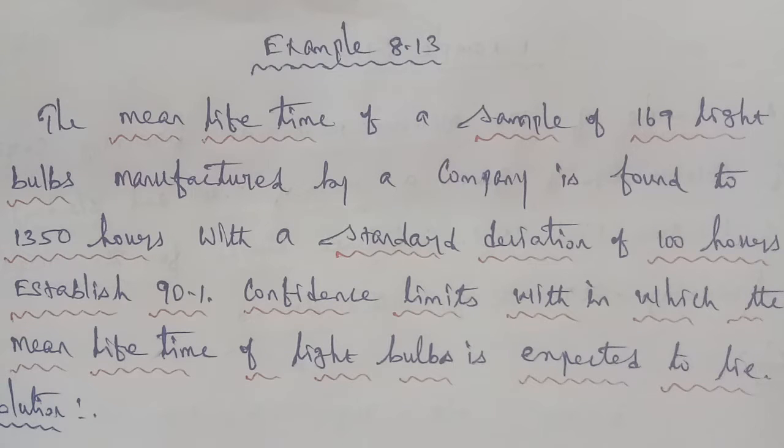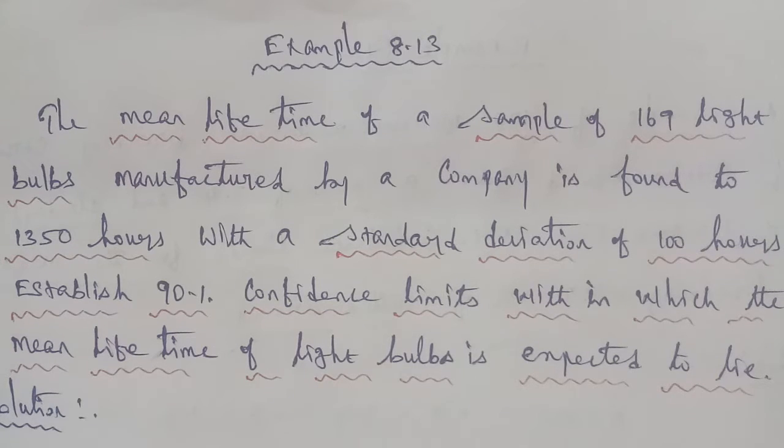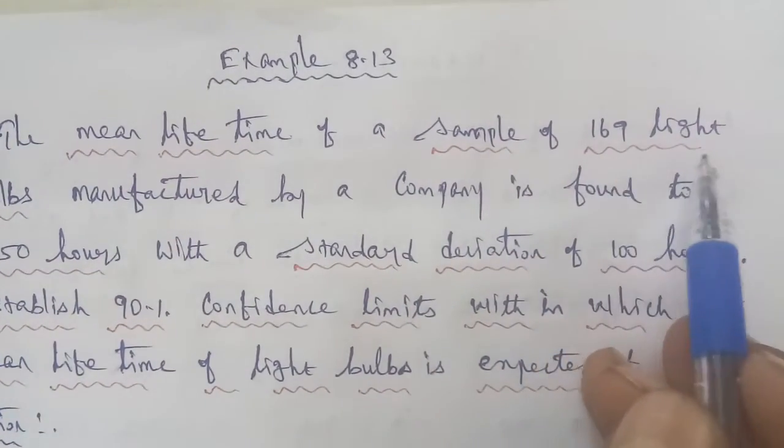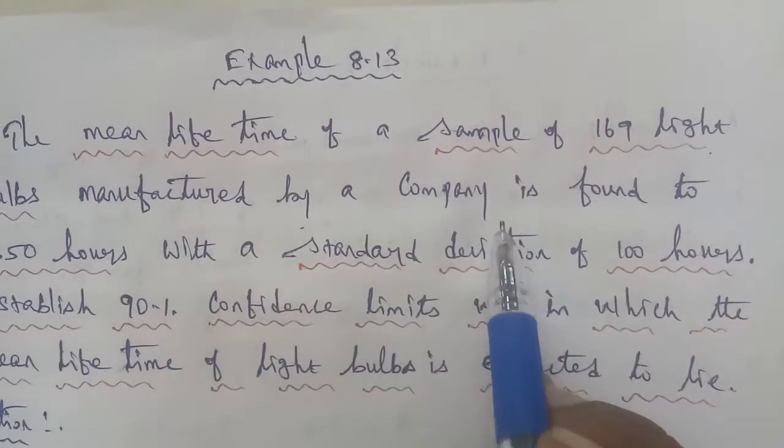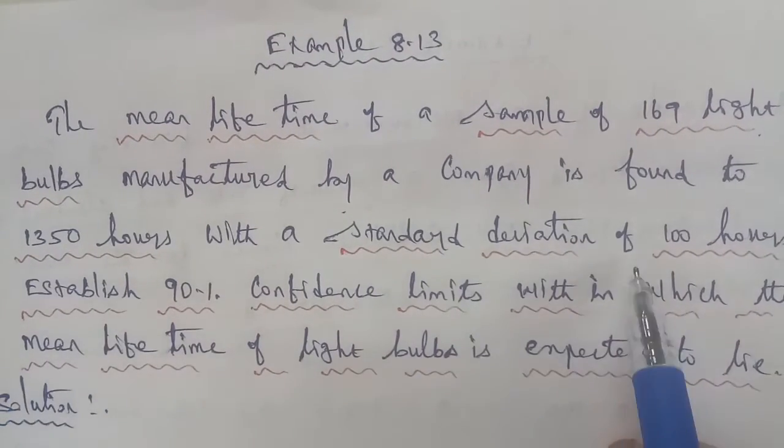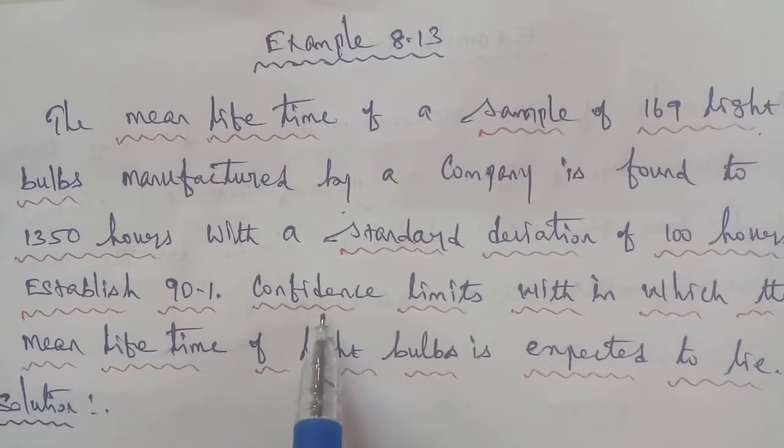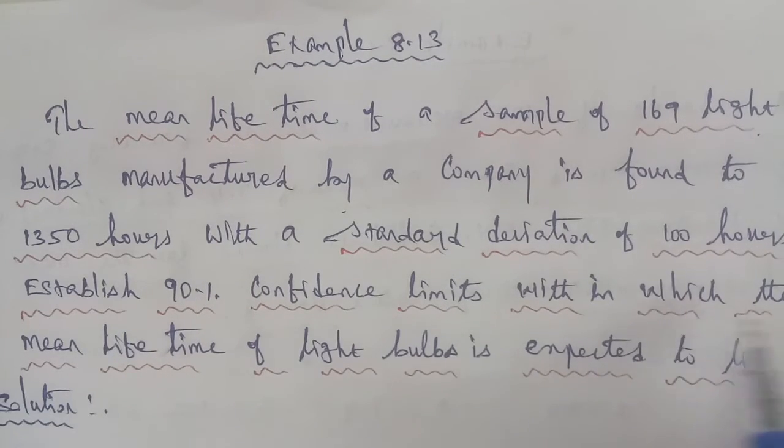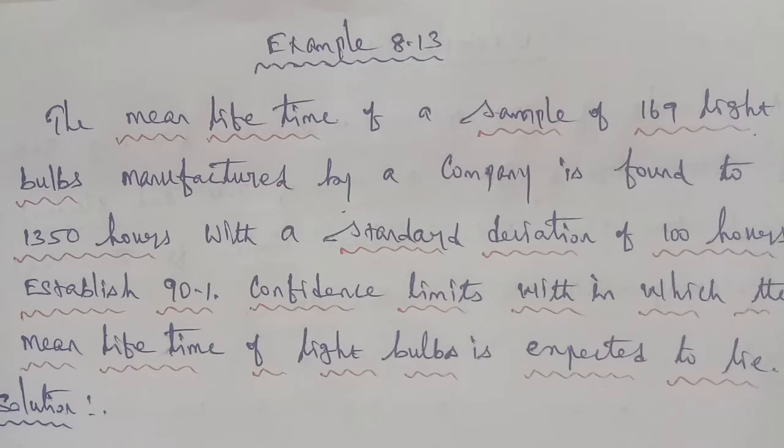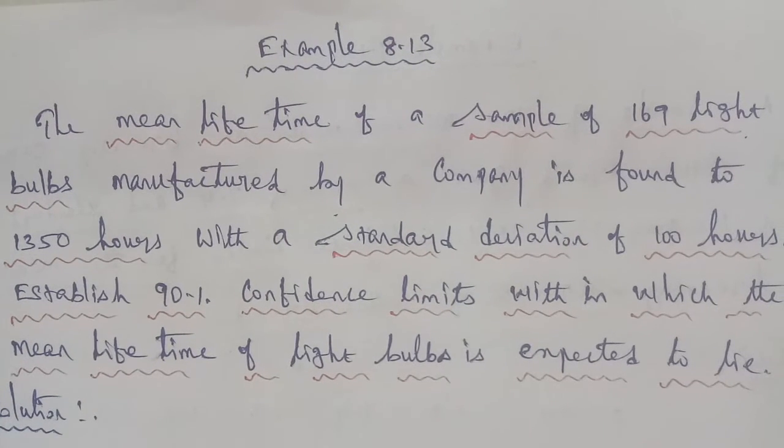Hi students, I am Gopinath. This is business math exam Example 8.13. The mean life time of a sample of 169 light bulbs manufactured by a company is found to be 1350 hours with a standard deviation of 100 hours. Establish 90% confidence limits within which the mean lifetime of light bulbs is expected to lie.